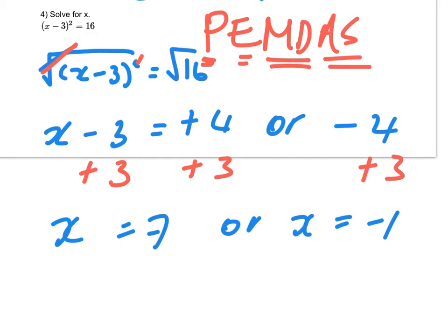Now you can check. If x is 7, plug it in here. 7 minus 3 is 4, 4 squared is 16. Or put minus 1 in. Minus 1 minus 3 is minus 4 squared, 16. So it works.